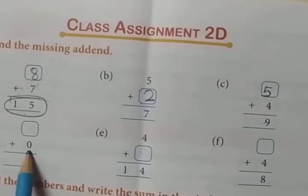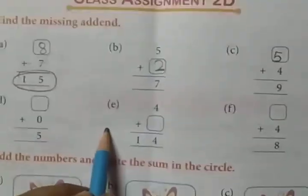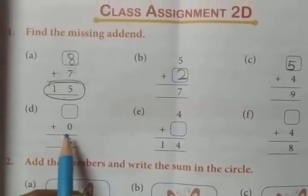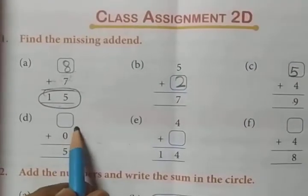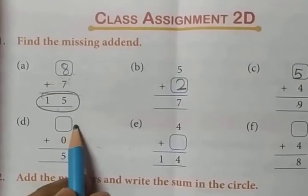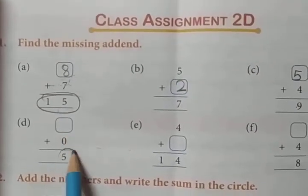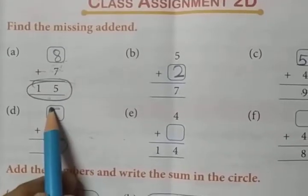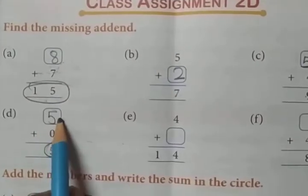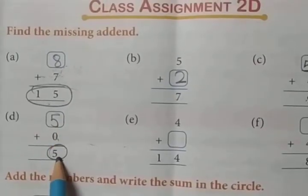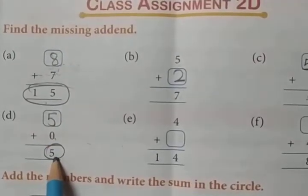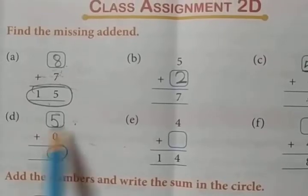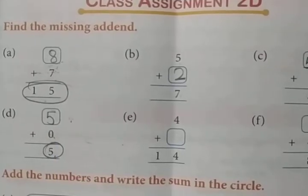The rest of the questions you will do by yourself. The number itself will be written here because 5 minus 0 — the answer will be the same number, so it will be 5 here.